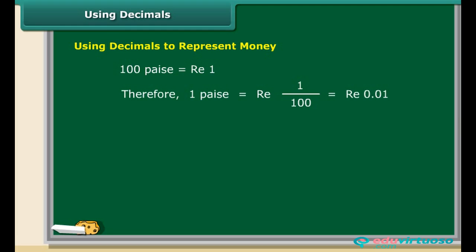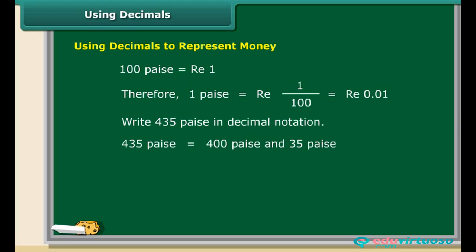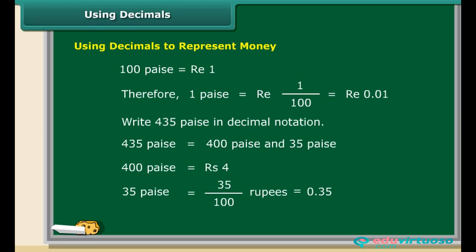Let us now use decimal notation to write 435 paise. 435 paise may be split as 400 paise and 35 paise. 400 paise are equal to rupees 4, and 35 paise equal 0.35. So, 435 paise are equal to rupees 4.35.